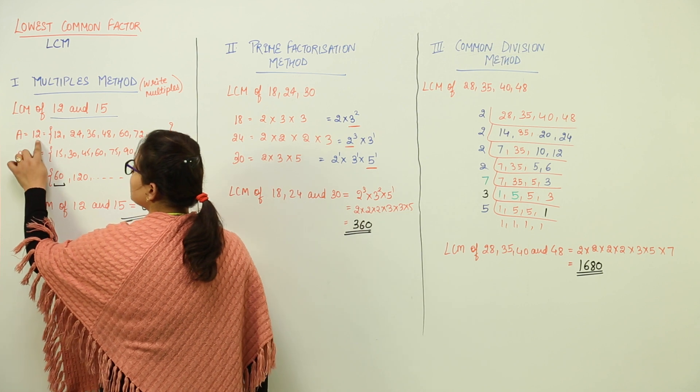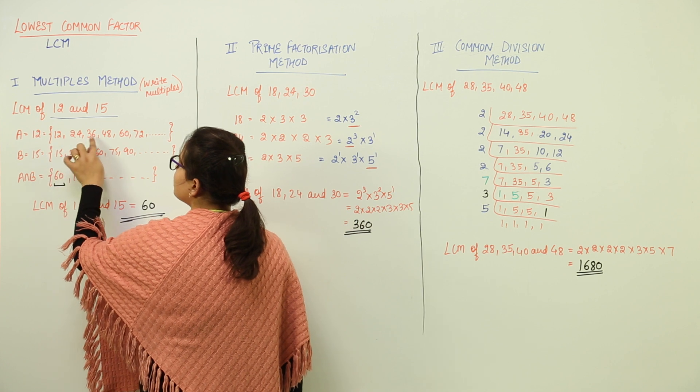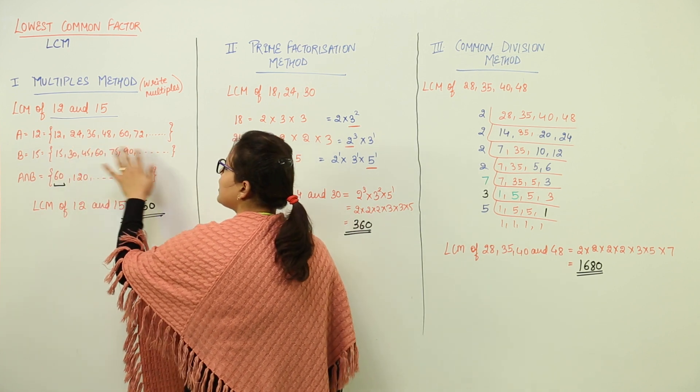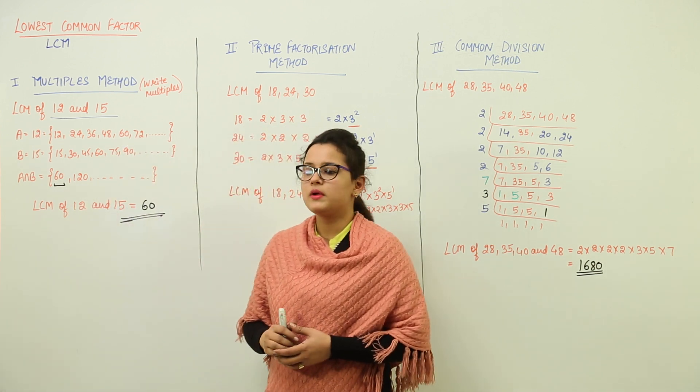Set A will be writing the factors of multiple 12. The factors would include 12, 24, 36, 48. All are the factors of 12. That means all can divide 12, right?